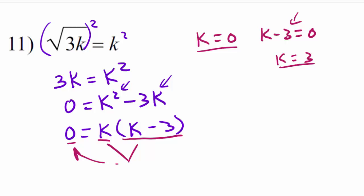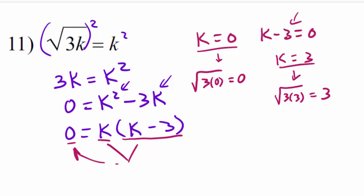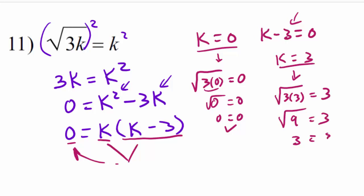Substituting k equals 0: square root of (3 times 0) equals 0, and the square root of 0 is 0. Zero equals zero — checks out. Substituting k equals 3: square root of (3 times 3) equals 3, which is the square root of 9 equals 3. Three equals 3 — checks out. Both answers are correct: 0 and 3.